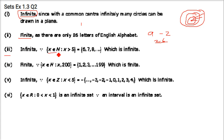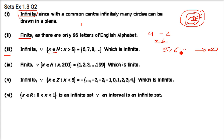Third one: x belongs to N such that x is greater than 5. When x is greater than 5 and a natural number, you start with 6 and this is left open-ended, meaning it can go up to infinity. We can't count it — it's uncountable. This is an infinite set.